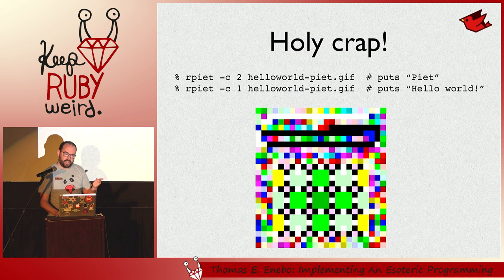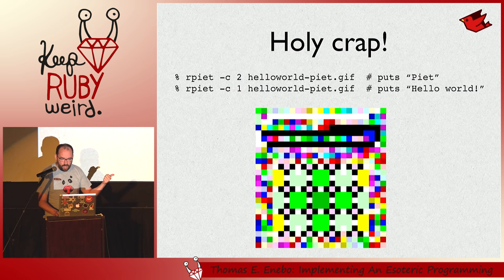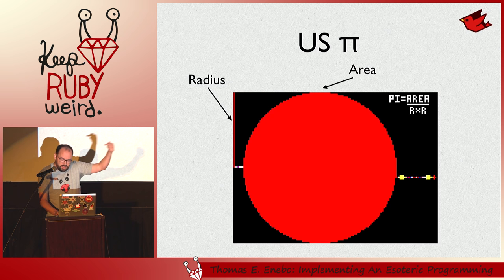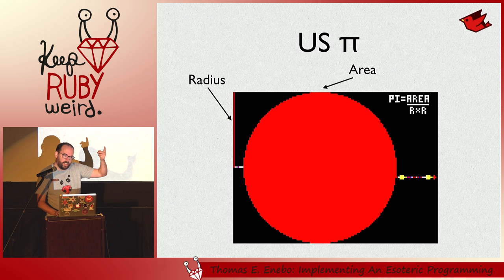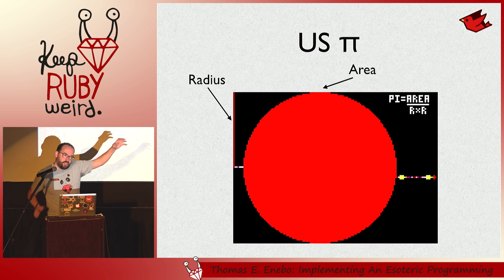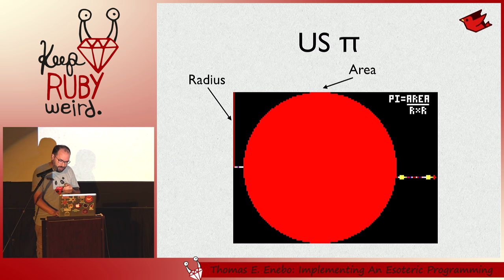Another one that's really cool — you can pass in what codel size you want to use. So if you pass a two-by-two codel in, it prints Piet, but if you pass in one, it prints Hello World. So that's pretty weird. This is a conceptually cool one: if you go to the upper left, the first thing that you push is something that's half the image in height, which is the radius. And then a little bit later, you put this jaggy circle as the area, and then you do the area divided by r squared to calculate a really bad value of pi.